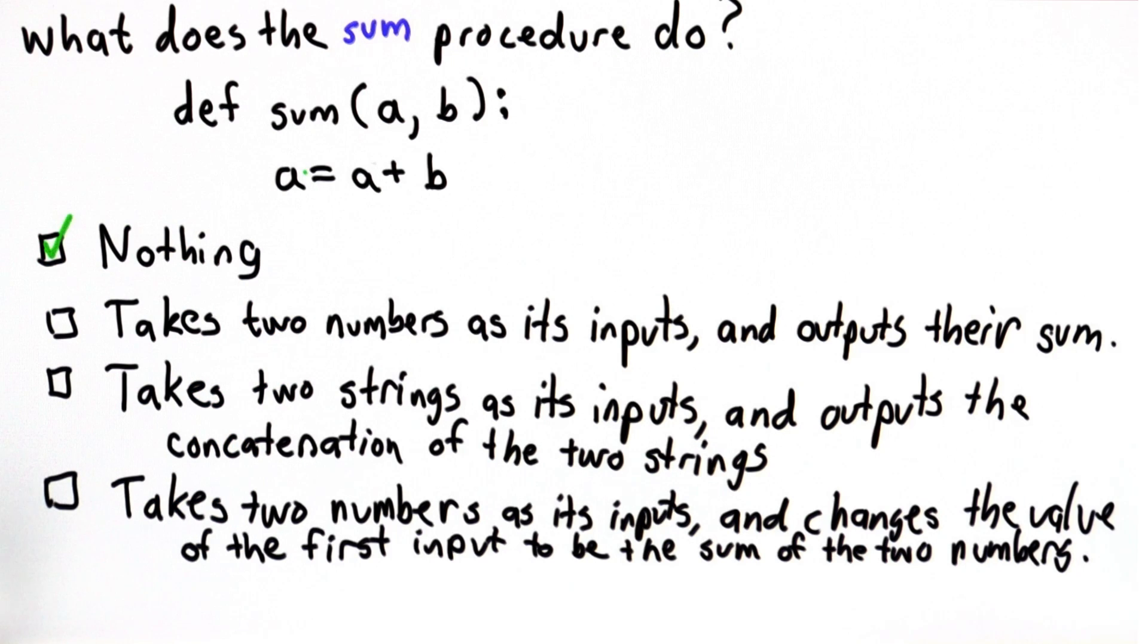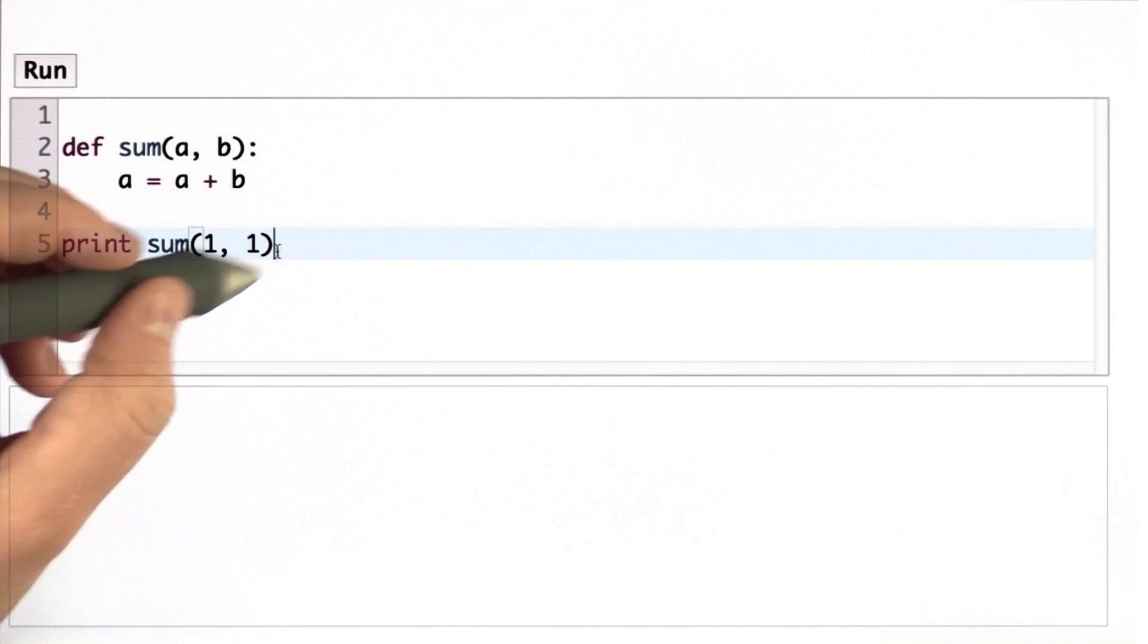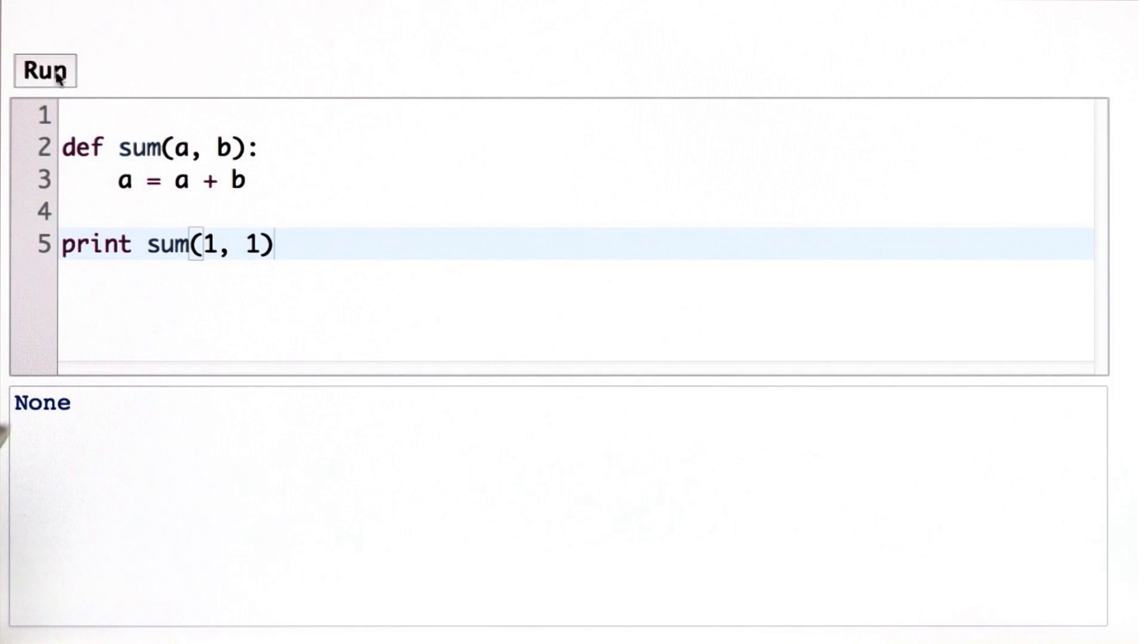So let's see that in the Python interpreter so we make sure we understand what's going on here. So we'll define sum to take those two inputs and have the body that assigns to a the value a plus b, and we can try printing the result of calling sum. Let's see if it can add 1 plus 1. When we run this, what we'll see is the result is actually none.